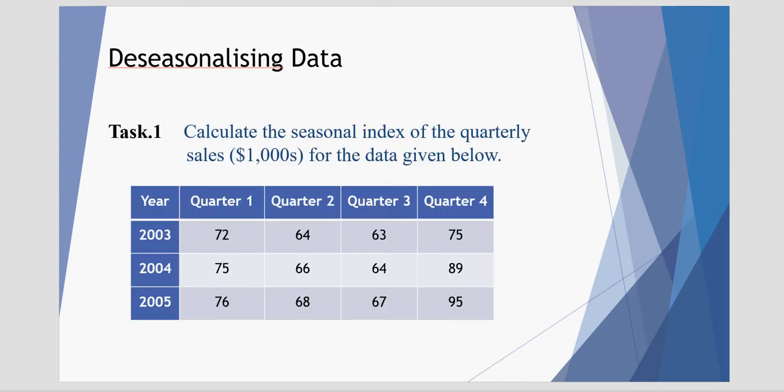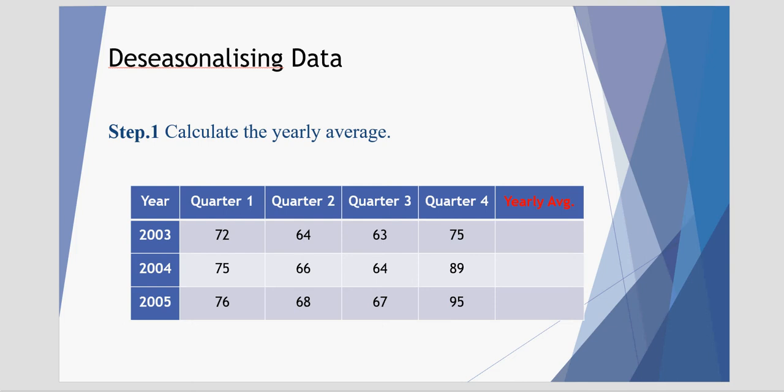We have a set of sales figures across three years broken up into quarters, each representing thousands of dollars. This is our raw data. The task is to calculate the seasonal index of the quarterly sales for the data given below. The first step in calculating the seasonal index is to calculate the yearly average.